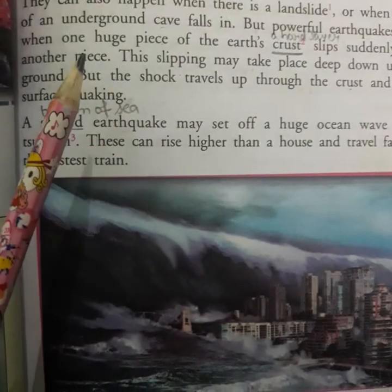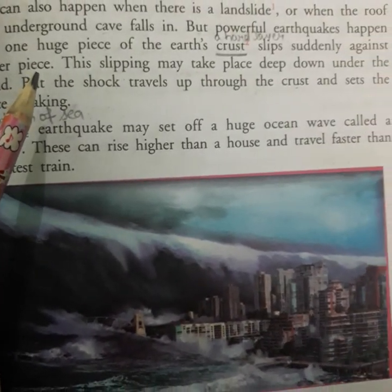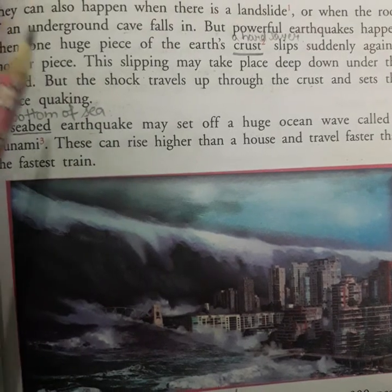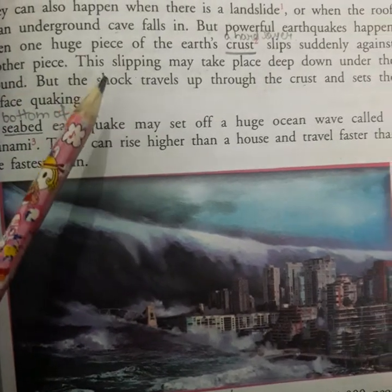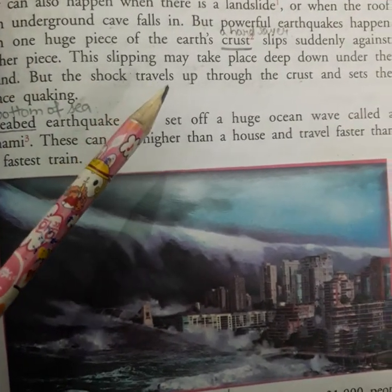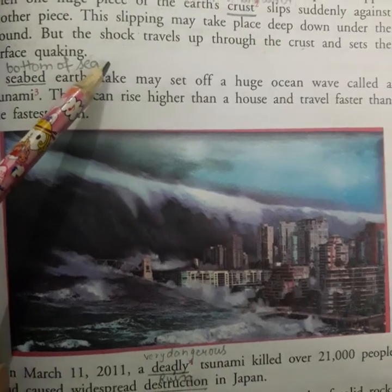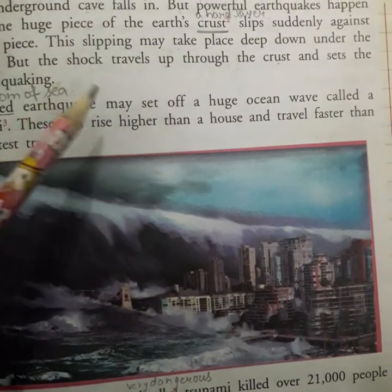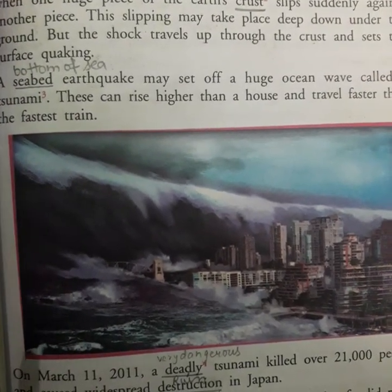But powerful earthquakes happen when one huge piece of the earth's crust slips suddenly against another piece. This slipping may take place deep down under the ground, but the shock travels up through the crust and sets the surface quaking — causing it to shake and shiver.